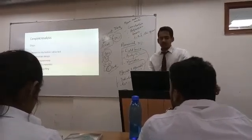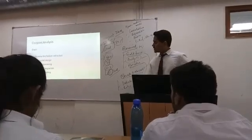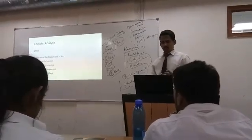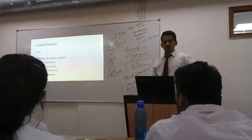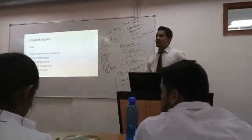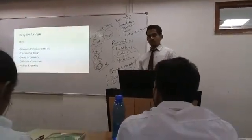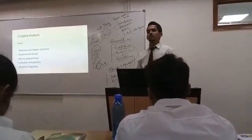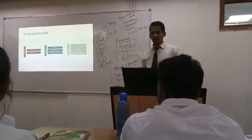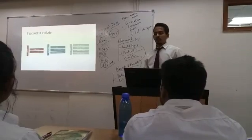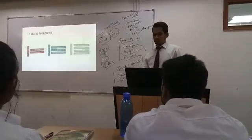Now, how is conjoint analysis conducted? It is conducted in these steps: first, determine the feature set to test; second, experimental design; third, survey programming; fourth, collection of responses; and finally, analyzing all the responses we are collecting. The hotel room example I discussed earlier illustrates this process.